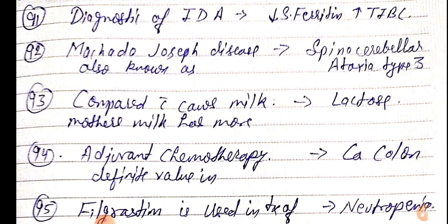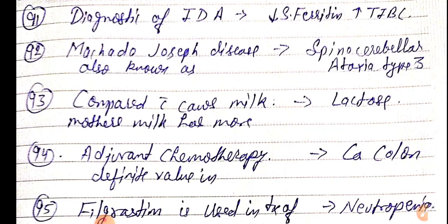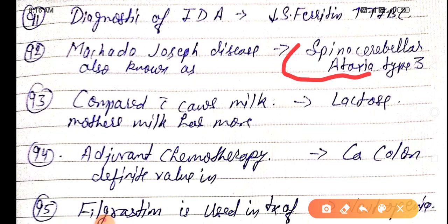Machado-Joseph disease is also known as spinocerebellar ataxia type 3.